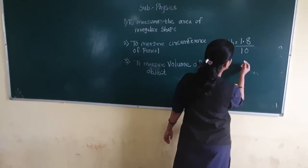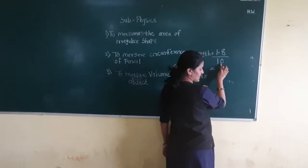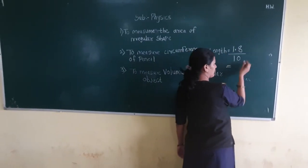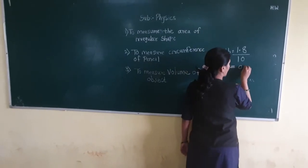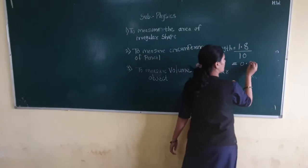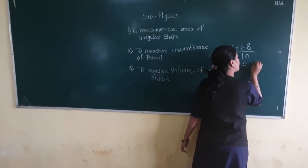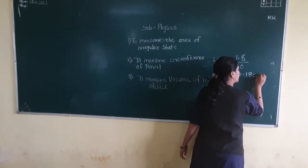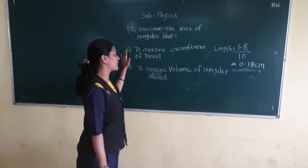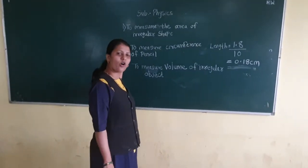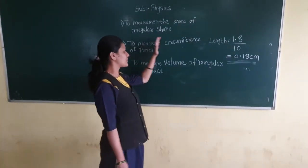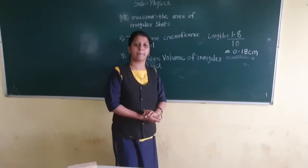The answer is going to come. When you divide 1.8 by 10, the decimal point shifts to the left, giving 0.18 centimeters. This was the calculation to measure the circumference of a pencil.